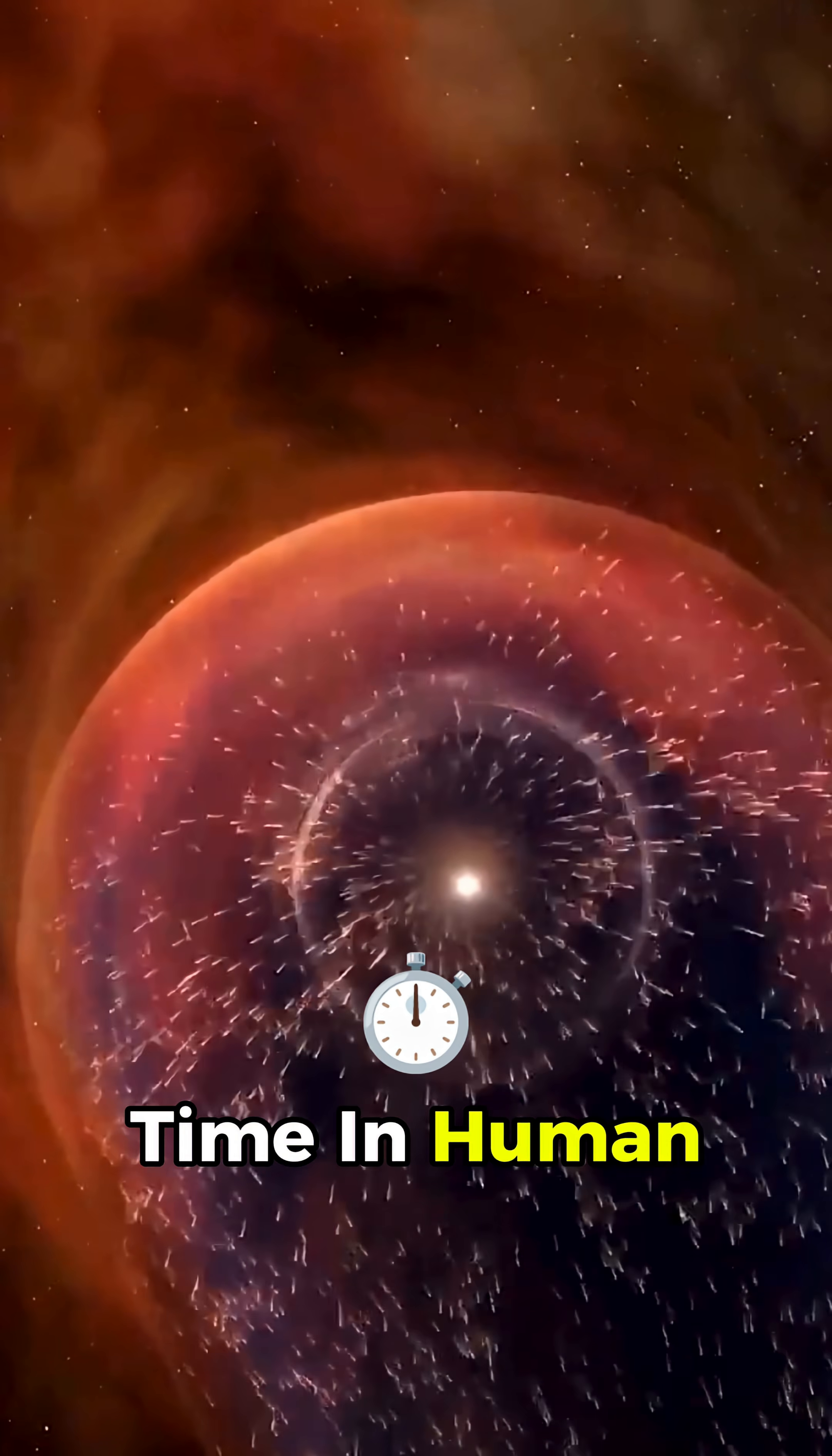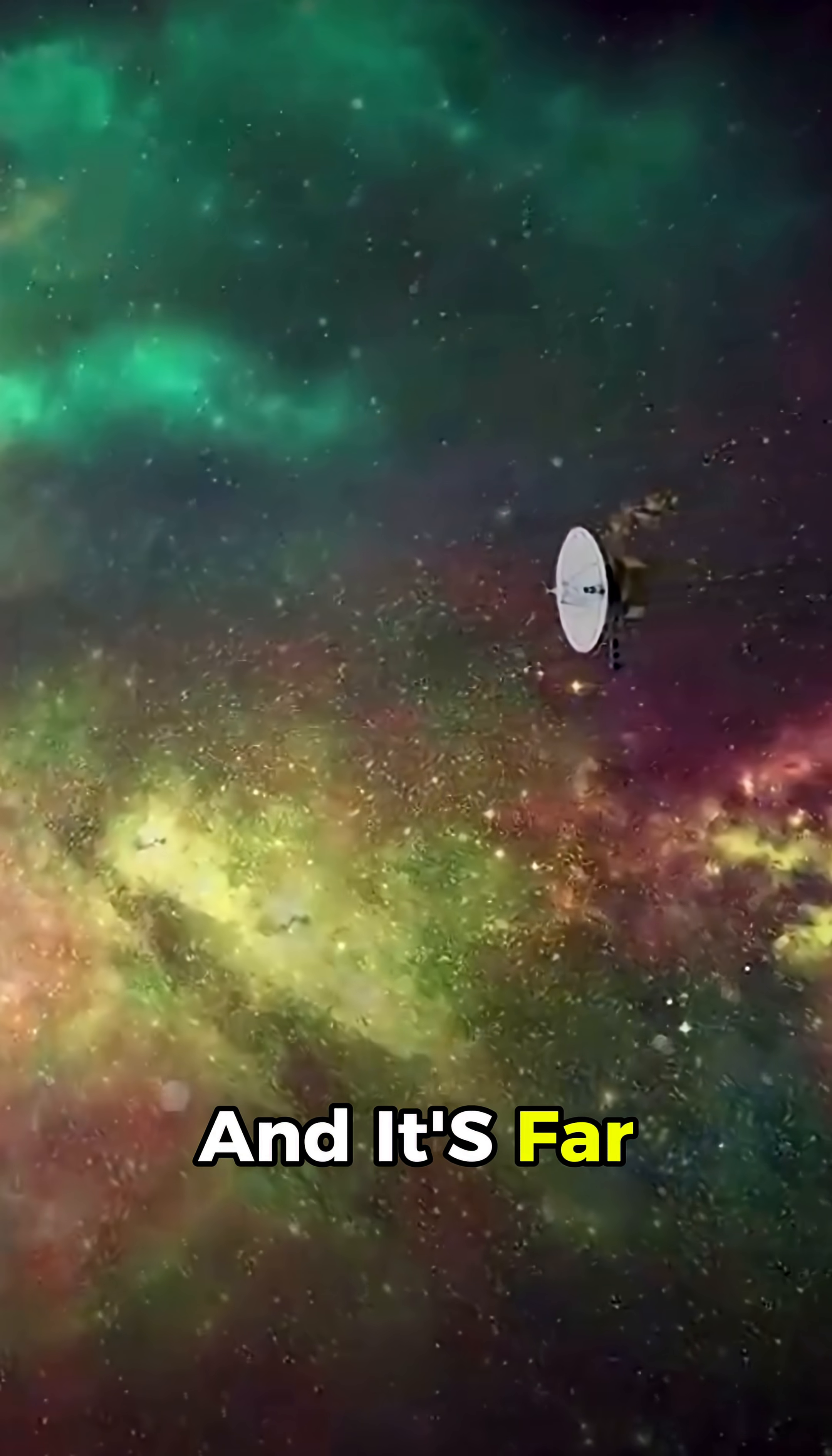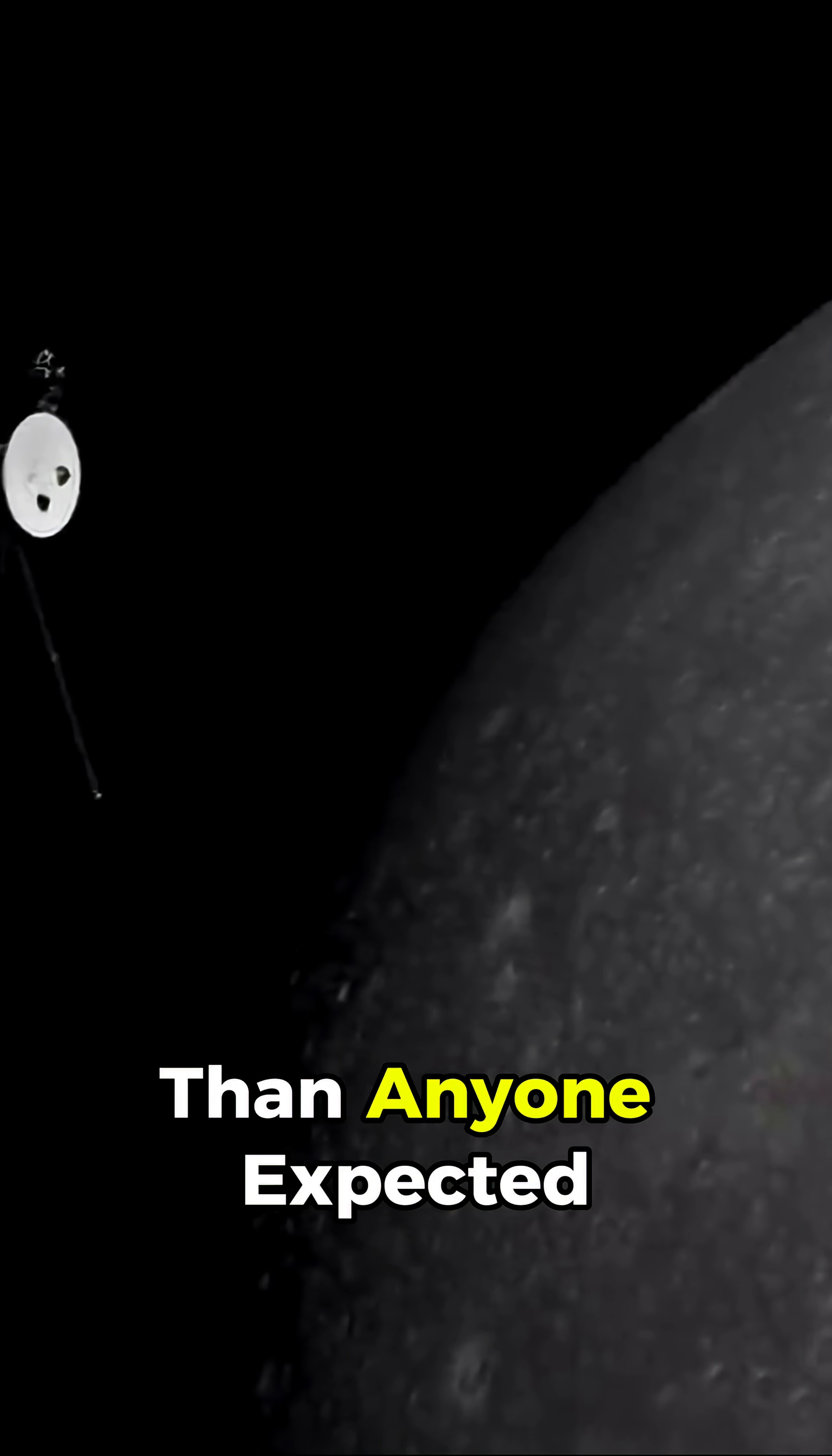For the first time in human history, NASA discovered what the edge of the solar system really looks like, and it's far stranger and more violent than anyone expected.